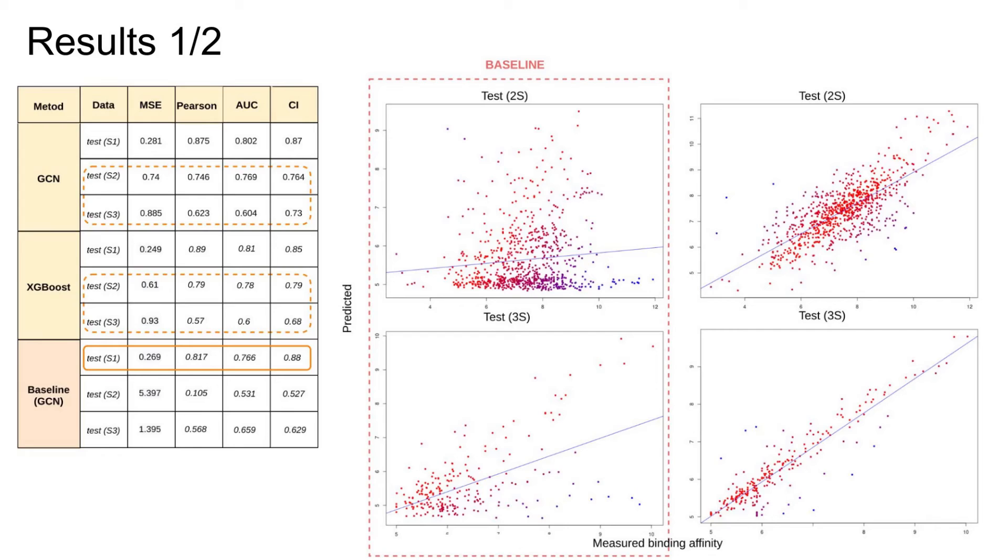But when comparing on more rigorous settings, such as test settings two and three, we see a huge difference in both GCN and XGBoost approaches. The baseline model shows almost random behavior, which is especially the case for setting two. This indicates the important impact of exposure to large compound space during the training phase, with both of our approaches being better when it's necessary to generalize over new compound scaffolds and new kinase targets.